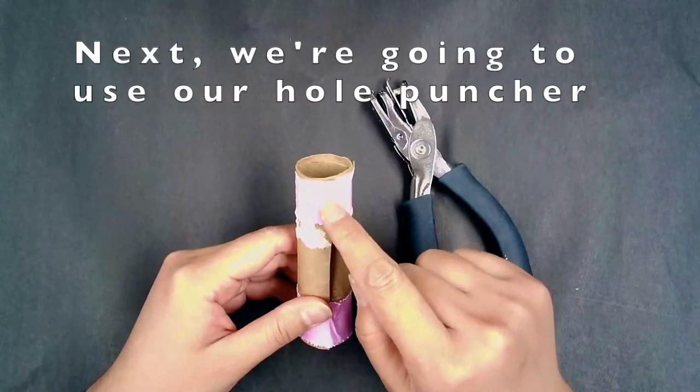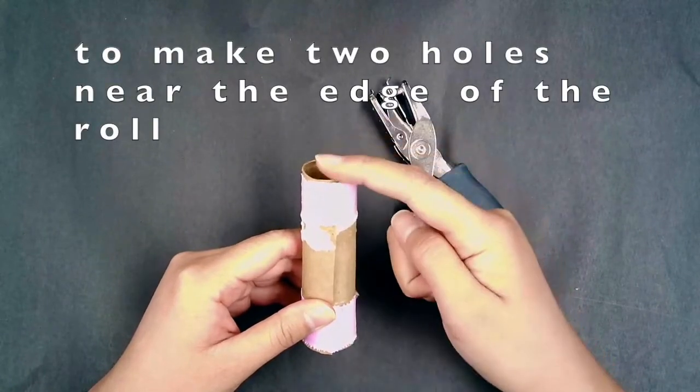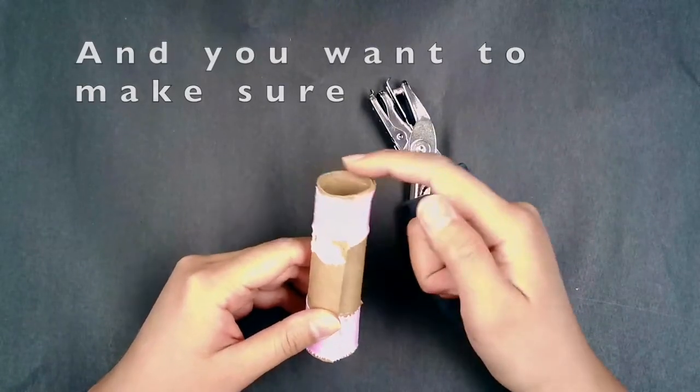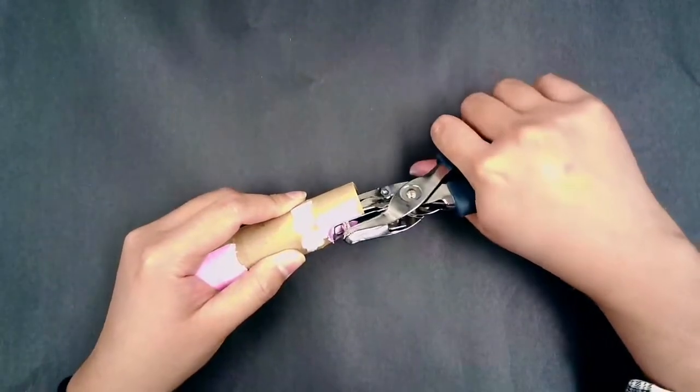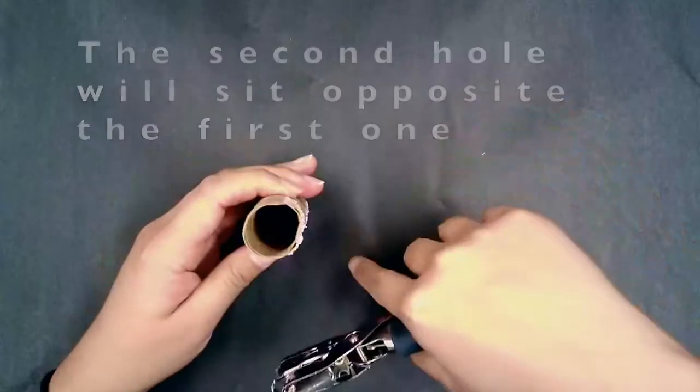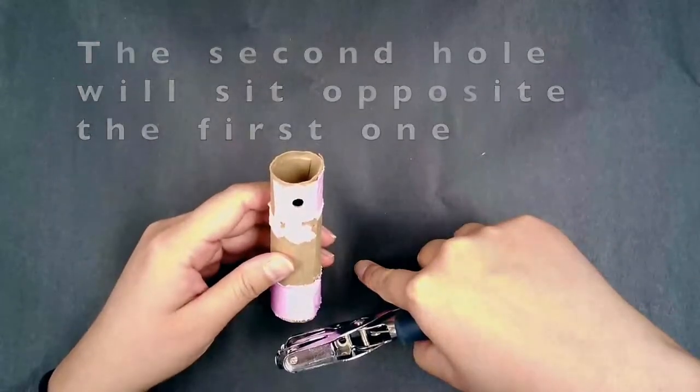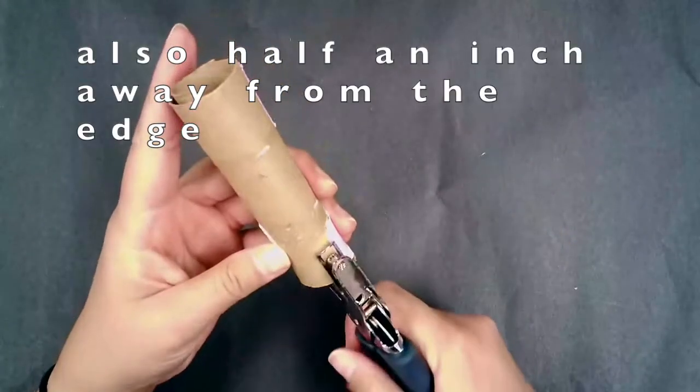Next, we're going to use our hole puncher to make two holes near the edge of the roll. And you want to make sure the holes sit about half an inch away from the edge. The second hole will sit opposite the first one, also half an inch away from the edge.